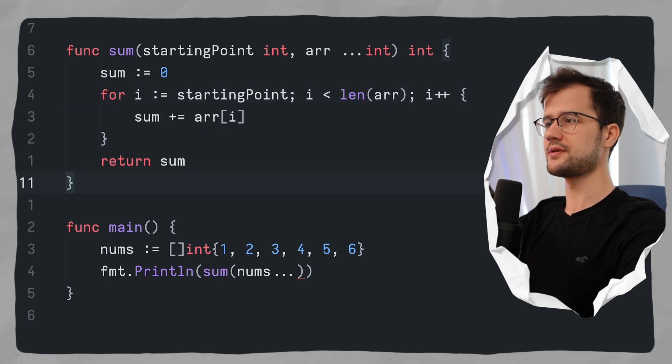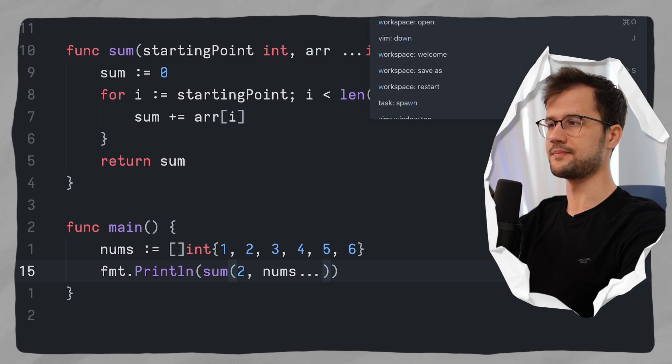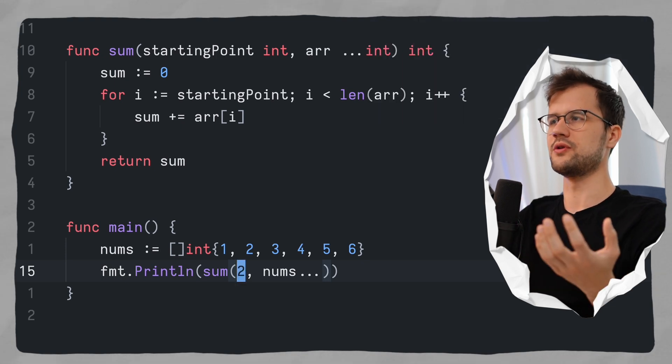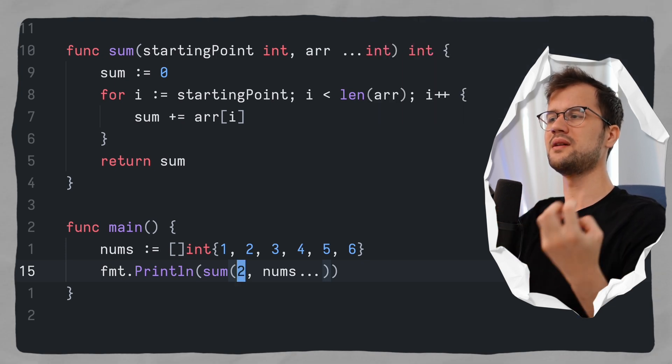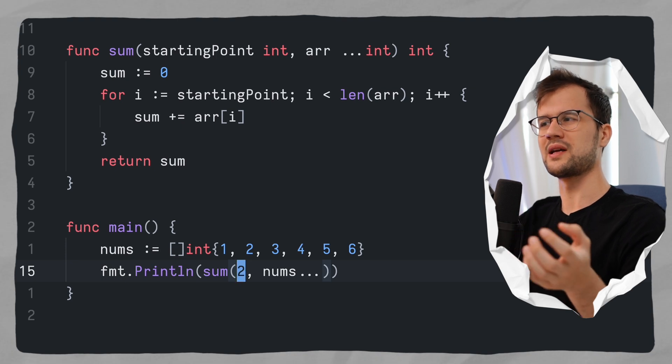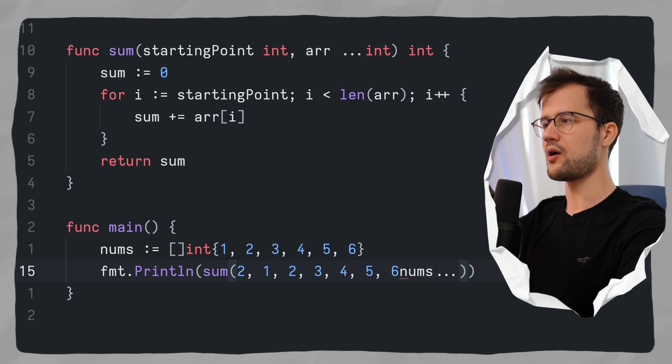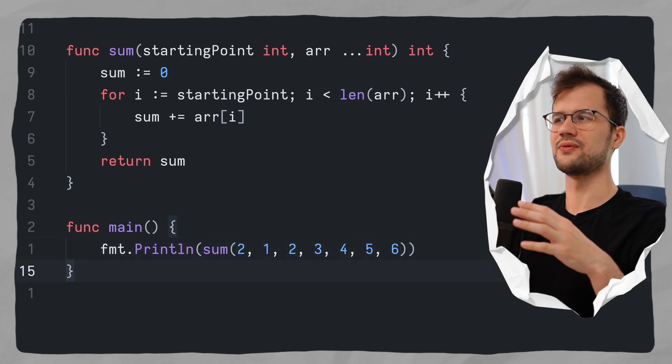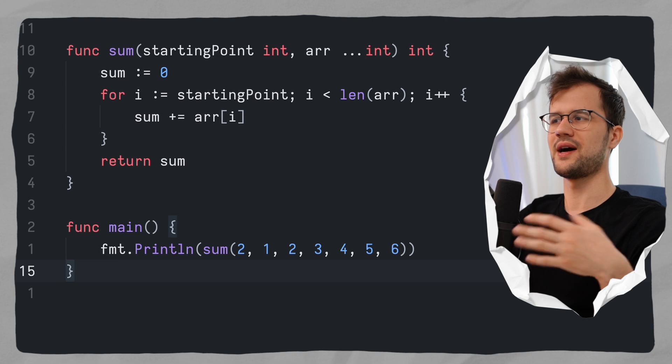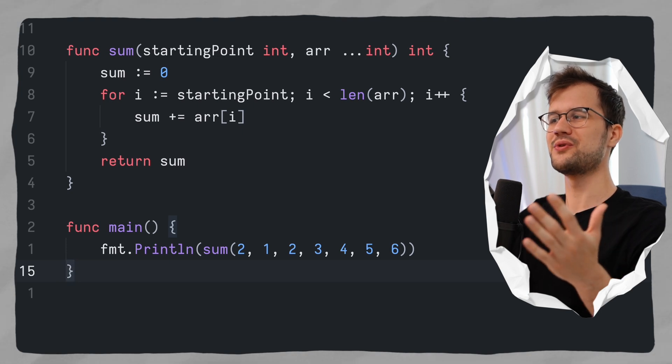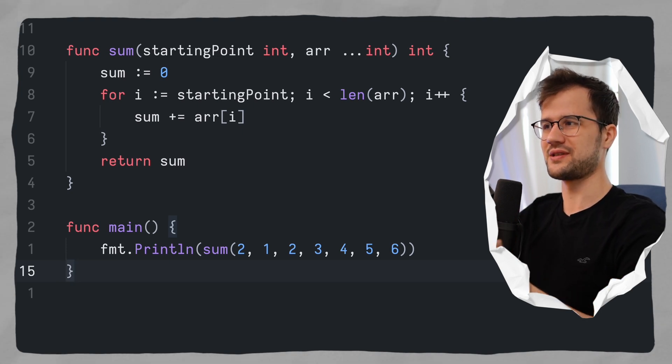So let's just save this and now obviously we have to define the starting point for our sum call. So what we can say is just say two here. Now this can be pretty confusing because we are kind of defining an integer and then we are defining more integers. So let's just get rid quickly of this num slice here and pass in our numbers. And now this looks kind of weird, because we define two and then we got 1, 2, 3, 4, 5, 6, which seems to be really weird.